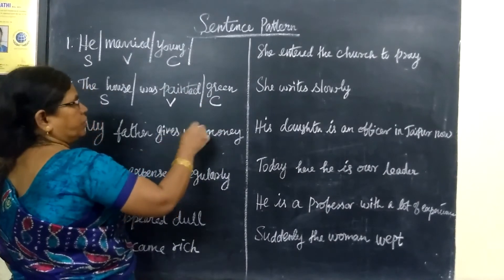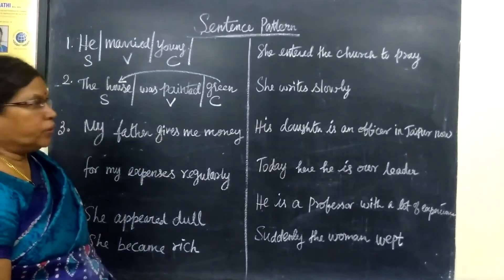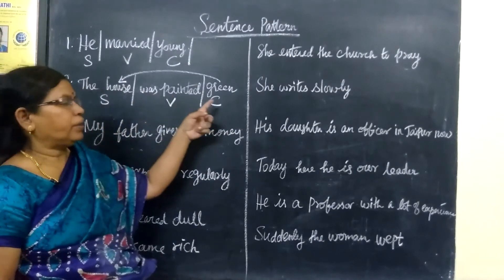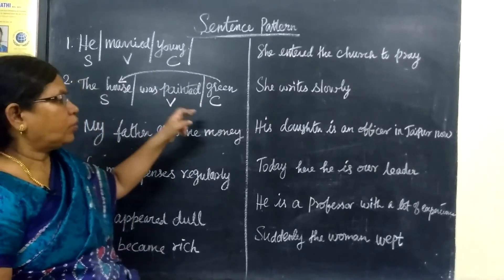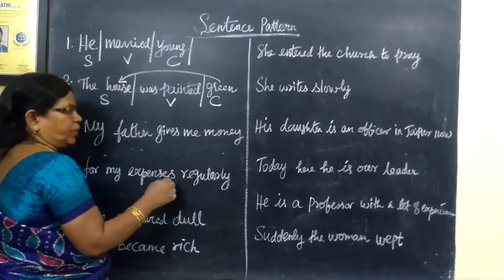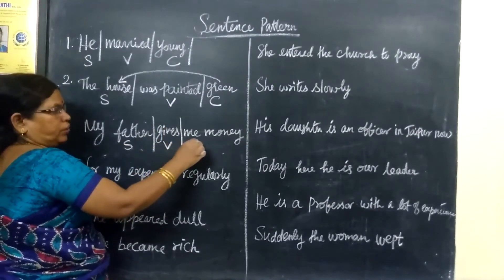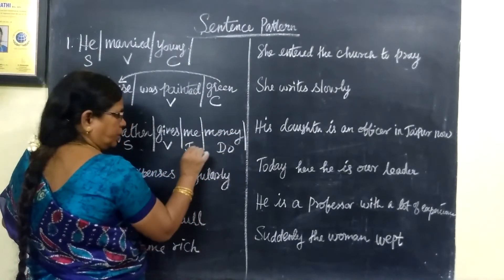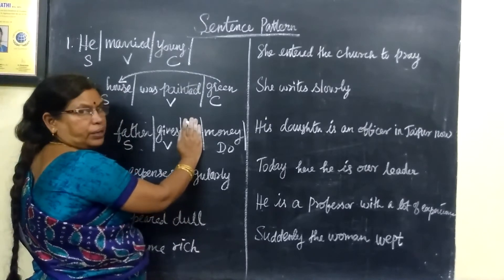If it's a complement, it refers to the subject — the complement is connected back to the subject. 'The house was painted green' — 'green' is the complement, it refers to the subject 'house.' Next example: 'My father gives me money.' Here, 'my father' is the subject, 'gives' is the verb, and 'me' and 'money' are objects. You should identify the subject here.